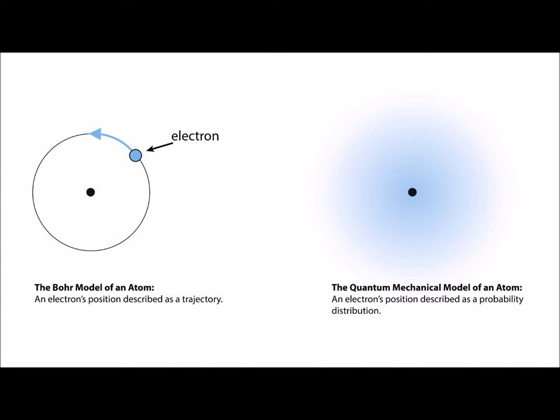However, Bohr's model was flawed. It turns out electrons have wave-particle duality, and we cannot know an electron's position and velocity completely at the same time.